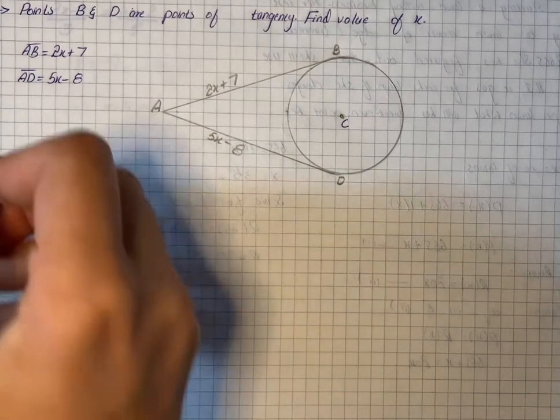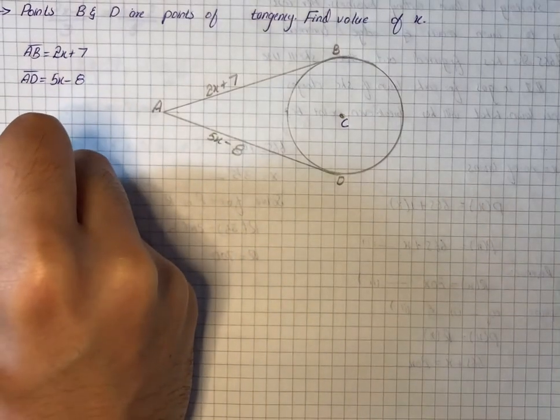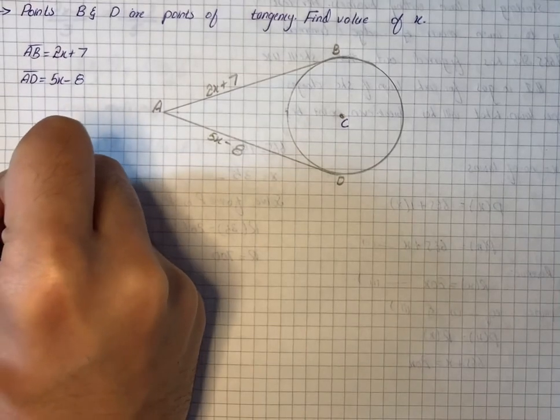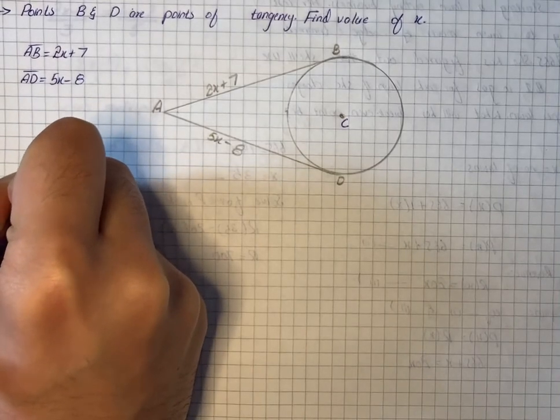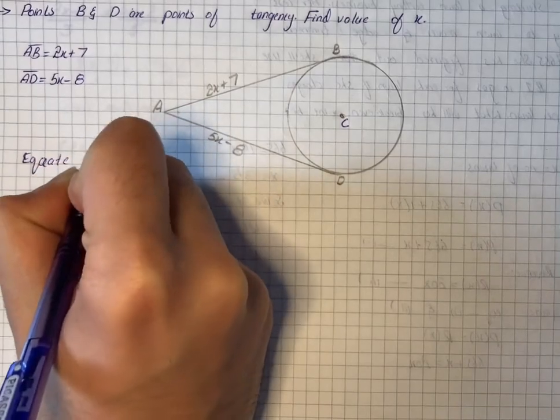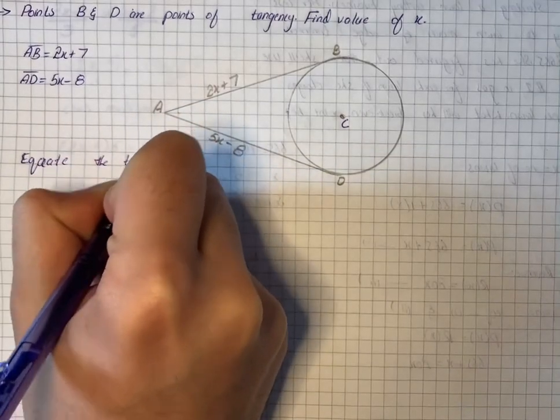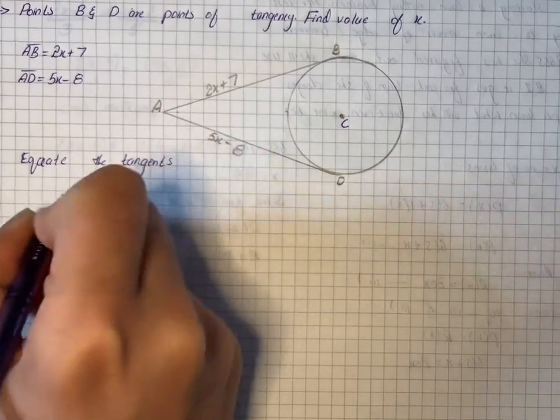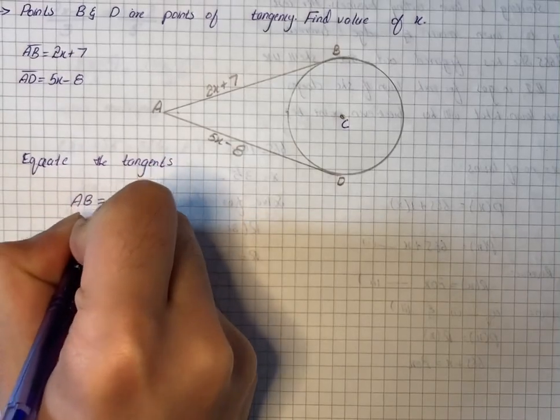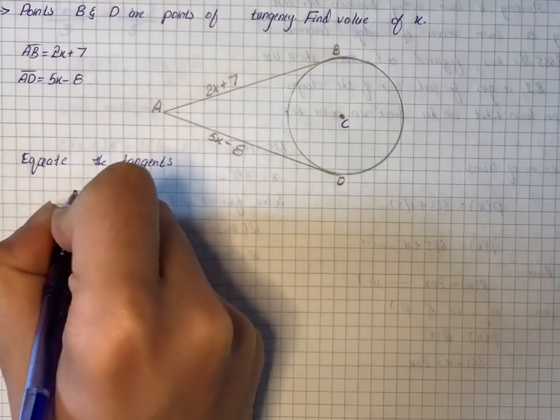equal tangent segments, so we can equate the tangents. We can say that AB is equal to tangent AD.